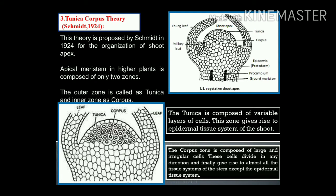The tunica is composed of variable layers of cells and gives rise to the epidermal tissue system of the shoot. The corpus zone is composed of large and irregular cells that divide in any direction and give rise to almost all tissue systems of the stem except the epidermal tissue system.